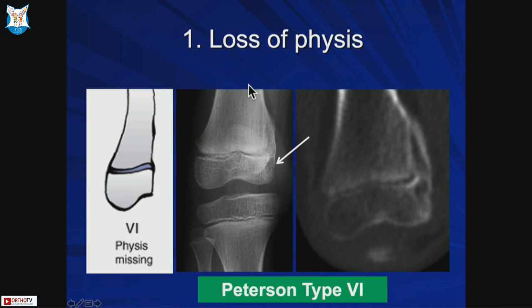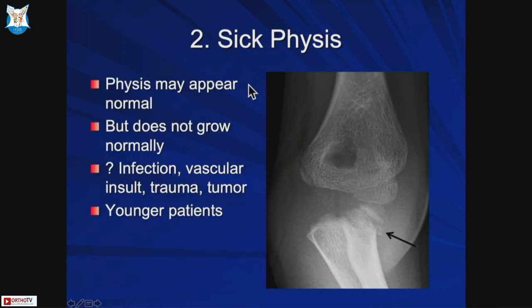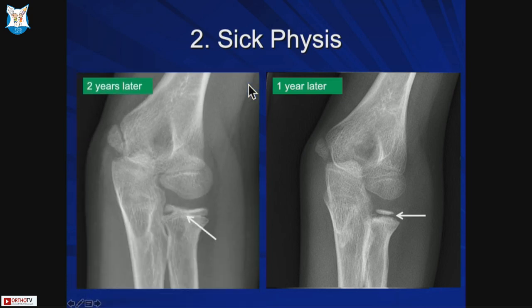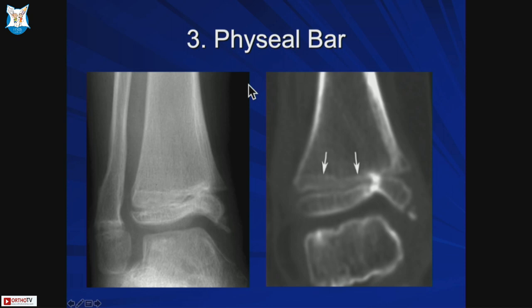This Peterson type six fracture involves loss of physis and also happens commonly on the medial malleolus because of road traffic accidents. Sick physis is where the physis may appear normal but does not grow normally - whether from infection, vascular insult, trauma, or tumor - and is seen in younger patients. Here is an example where at one year the physis appears okay, but at two years it starts to close down.